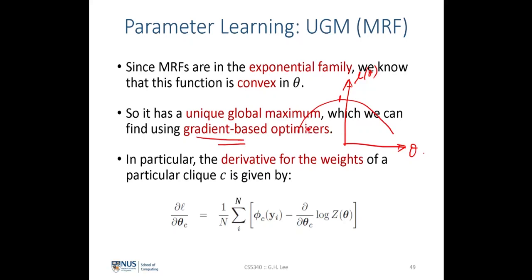Starting from any random initialization of theta, we compute the gradient and perform gradient ascent. We are always guaranteed to reach the global maximum because there is a unique global maximum in the exponential family. Hence we say this function L is convex in theta.